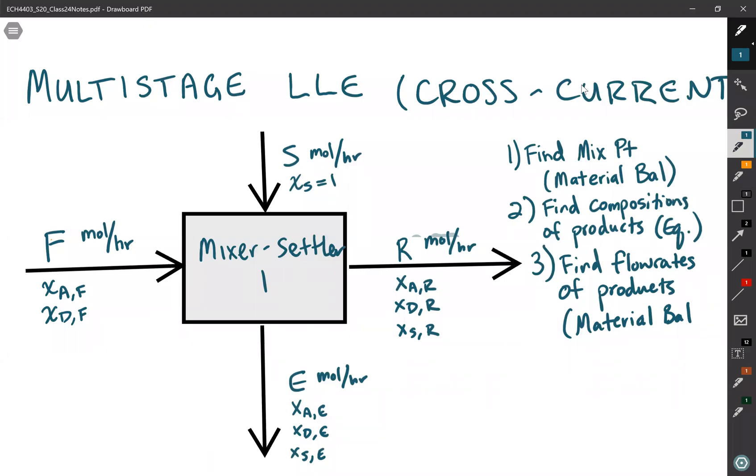Last time in separations and mass transfer operations, we talked about the solution procedure for a single liquid-liquid equilibrium stage. Recall that the feed is typically composed of some solute, the letter A, mixed with some diluent, letter D. Into the stage also flows some solvent, which will extract some of the solute into that phase. In a single mixer settler, there's only one raffinate and one extract stream, each of which have three compositions for the three components.